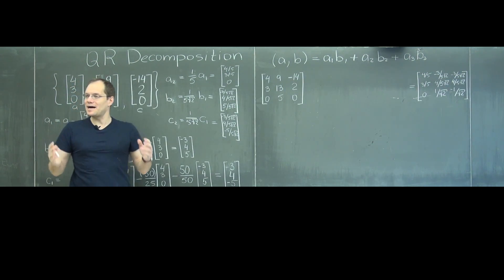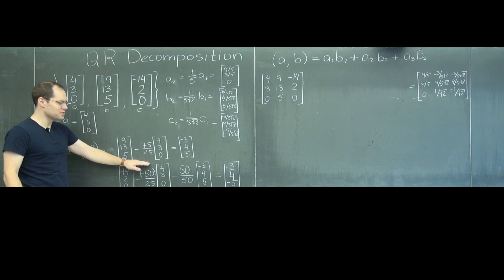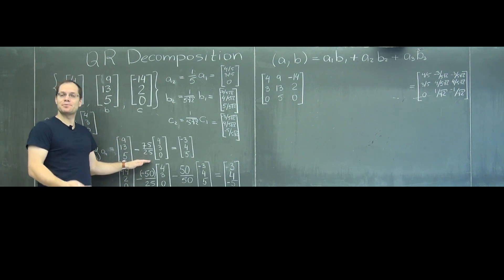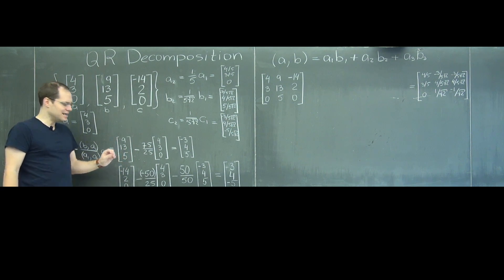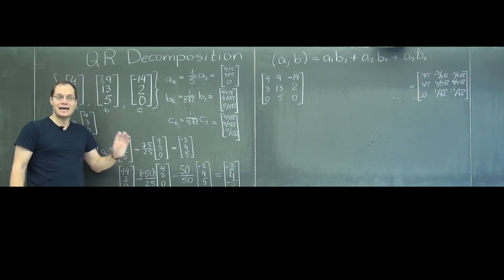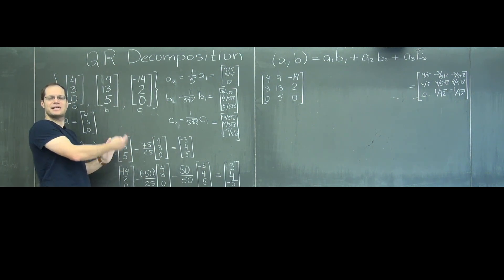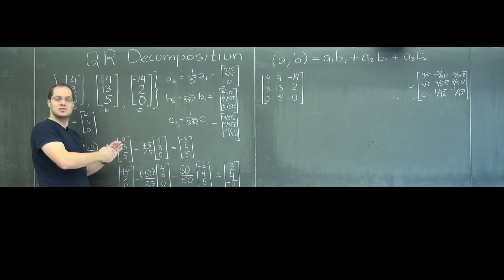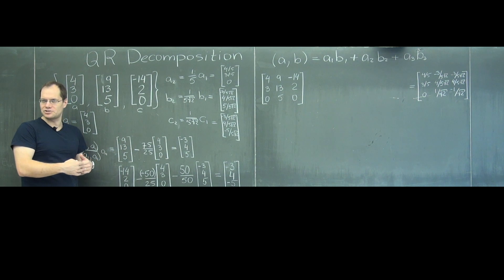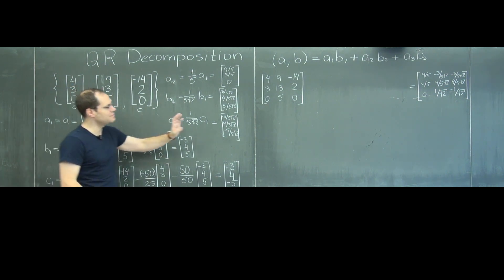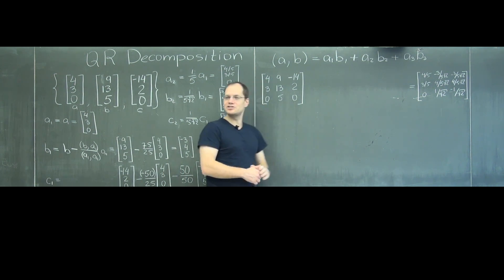Now let's think about the steps that we applied to the vectors. As an operation on a matrix, look what we actually did — column-wise. Things are now happening to columns. If you think back to Gaussian elimination and the LU decompositions, things were being done to rows, so those elementary matrices were being put in front of the matrix. But because we're doing something to the columns, now the operations are going on the right.